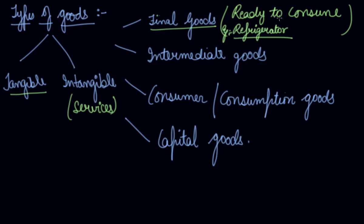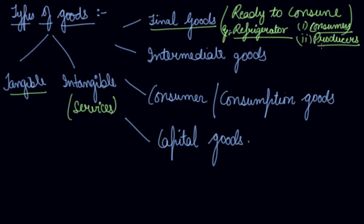Who can be final users? Final users can be consumers or producers themselves. For example, a producer of aerated drinks requires refrigerators. If they are purchasing the refrigerator, they are the final consumers. If you or I are purchasing a refrigerator without doing any further processing on it, then we are the consumers. So final goods are goods that are ready to consume.